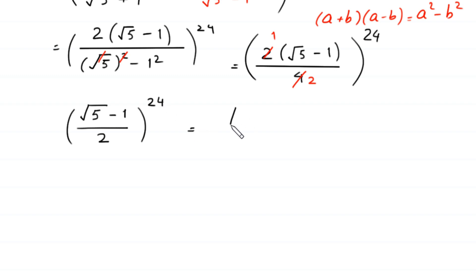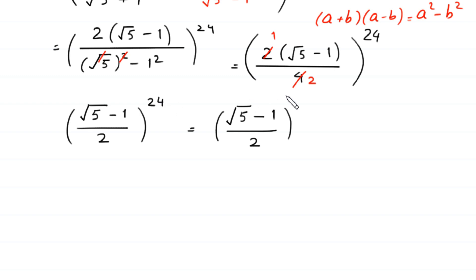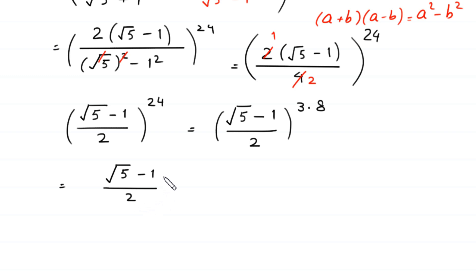Next, (square root of 5 minus 1) divided by 2, whole to the power 24. We can write 24 as 3 times 8. So this expression becomes [(square root of 5 minus 1) divided by 2, whole cubed] whole to the power 8.